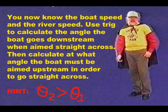Summarizing: use trig to calculate the angle the boat goes downstream when aimed straight across, then calculate at what angle the boat must be aimed upstream in order to go straight across. I found that theta2 was greater than theta1.